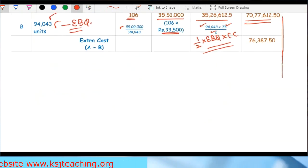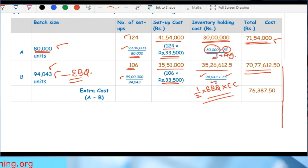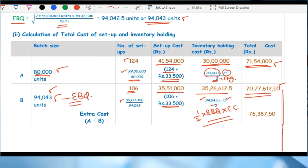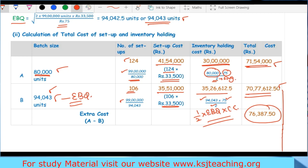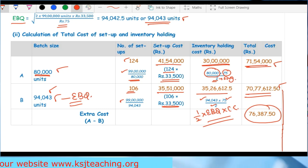So the extra cost incurred is Rs 71,54,000 minus Rs 70,77,612.50 equals Rs 76,387.50 if we don't make batches according to EBQ and instead prepare 80,000 units.